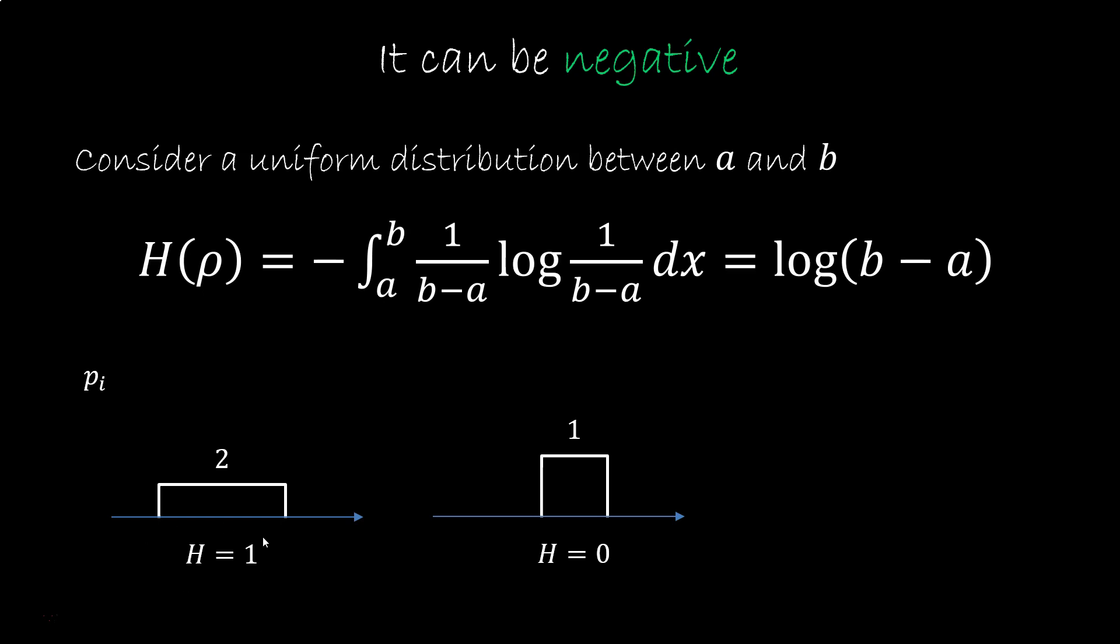You need one bit of information, one question, to narrow it down to a unit. For example, is it greater than a plus b over two, the average value. But if you have half a unit interval, the variability is lower than a unit. Entropy is minus one. To identify an element up to a unit, you have to forget one bit of information.